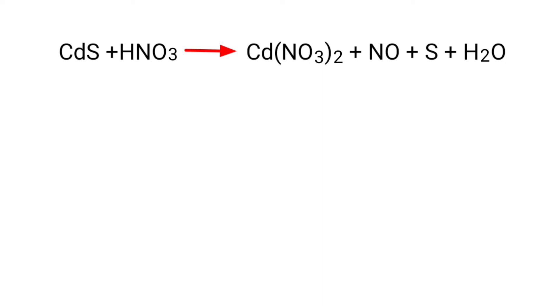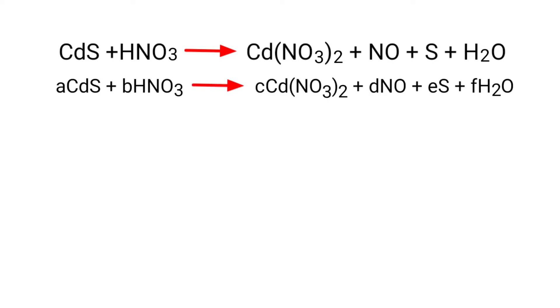The first thing we do is give each compound a letter coefficient: A·CdS plus B·HNO₃ gives us C·Cd(NO₃)₂ plus D·NO plus E·S plus F·H₂O.